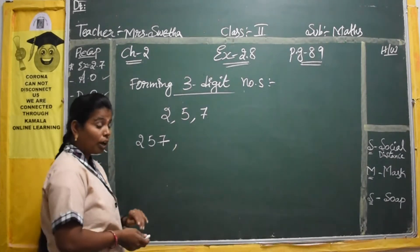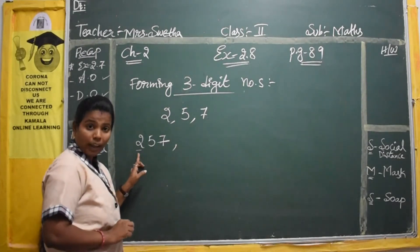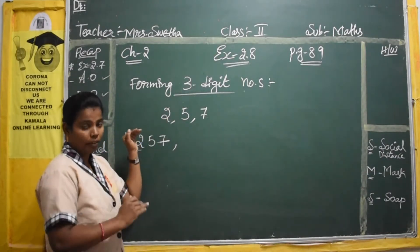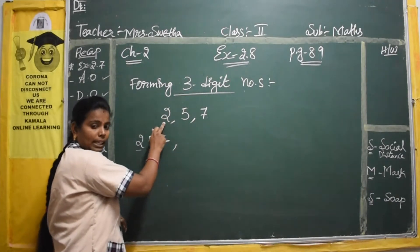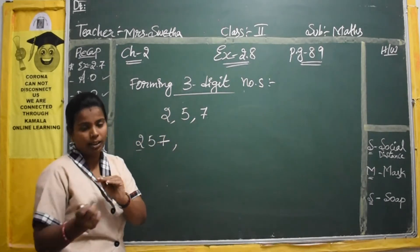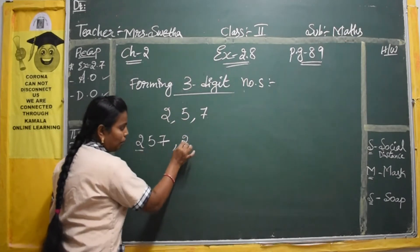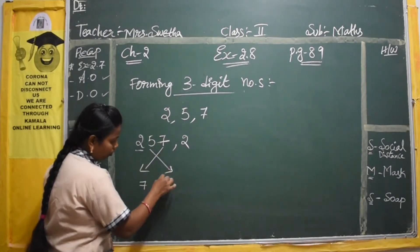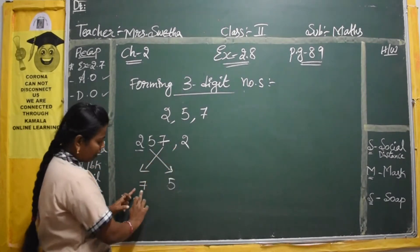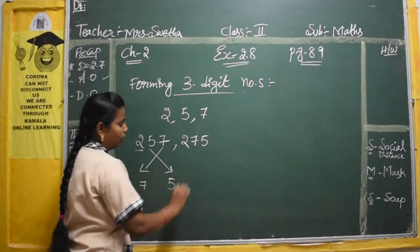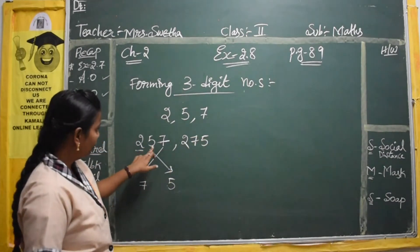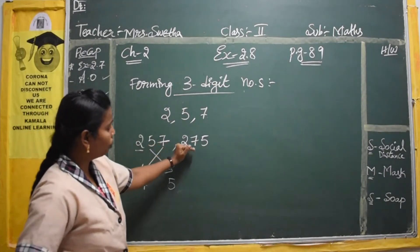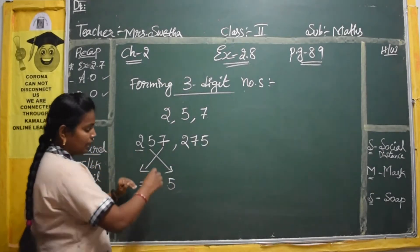For the second set, keep the first number the same. Since there are three digits, you can form two sets starting with each single number. With 2 as the common first number, swap the other two: 2, 5, 7 becomes 257, and then 7 and 5 swap to give 275. That is one set completed.